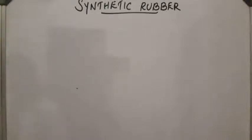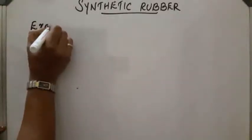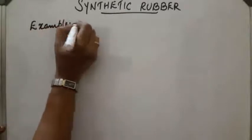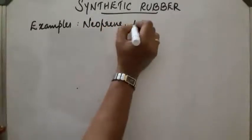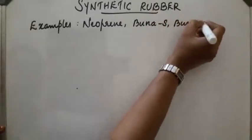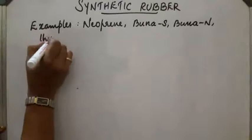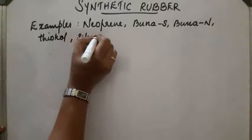Synthetic rubber. Synthetic rubber is man-made rubber which has similar properties to natural rubber. So synthetic rubbers are either homopolymers or copolymers. Some examples are: Neoprene, Buna-S, Buna-N, Thiocol, Silicons, etc.